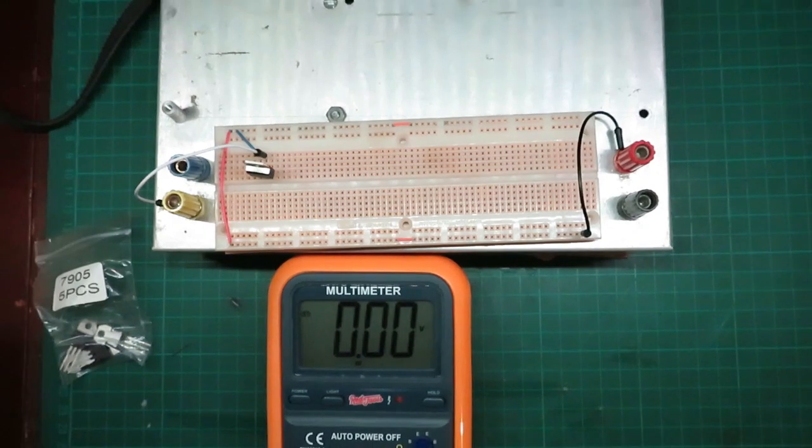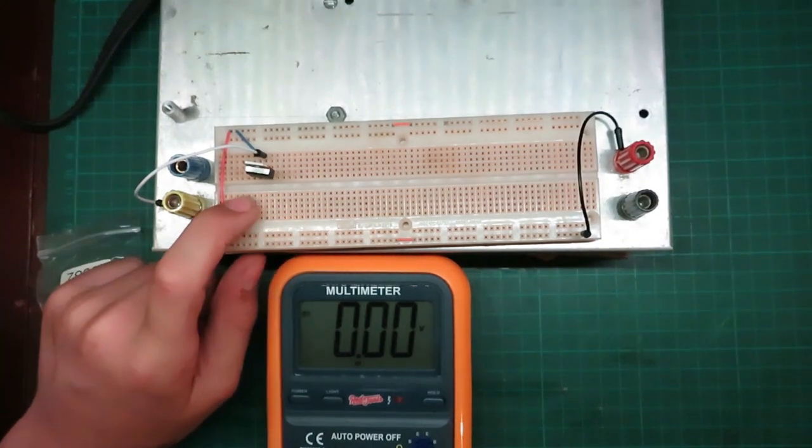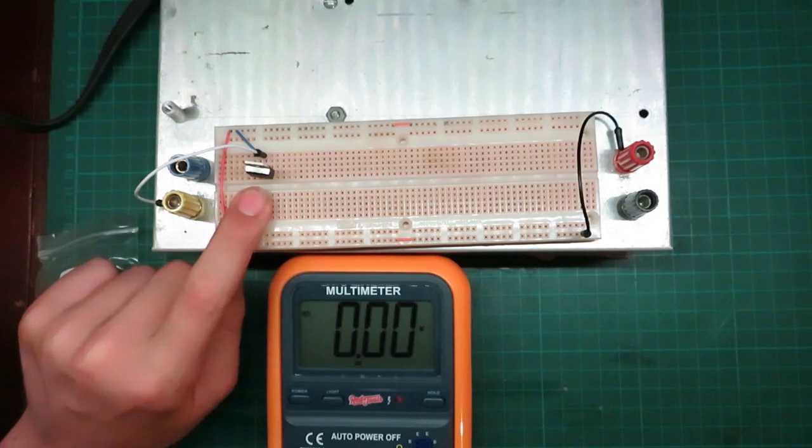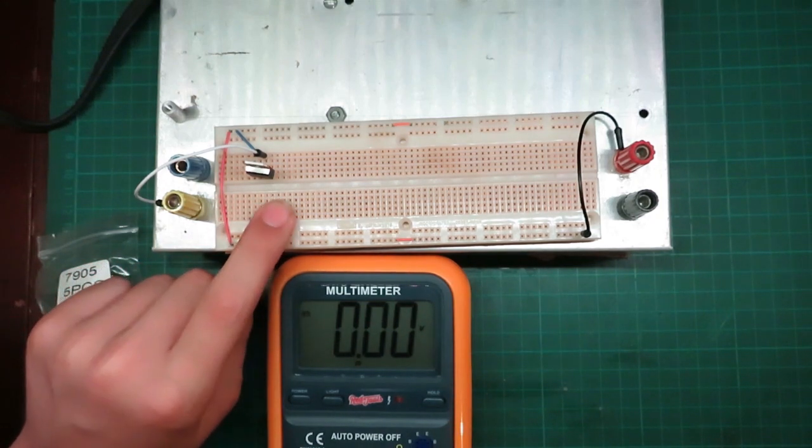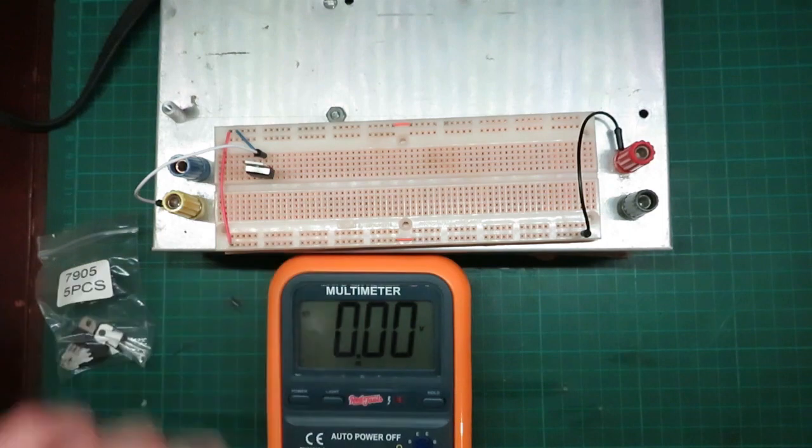Here we have the circuit all breadboarded up. Starting from the pin on the left, the first pin is ground, the middle pin is the input, and the third pin on the right is output.